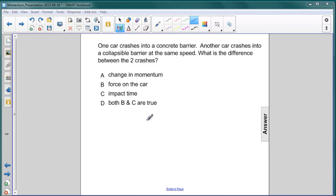In this next question, one car crashes into a concrete barrier, another car going the same speed crashes into a collapsible barrier. What is the difference between the two crashes?